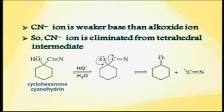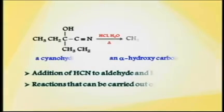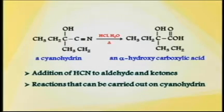Cyanide ion is a weak base. The cyanide anion forms the tetrahedral intermediate. Aldehydes and ketones undergo cyanide addition to form cyanohydrins.